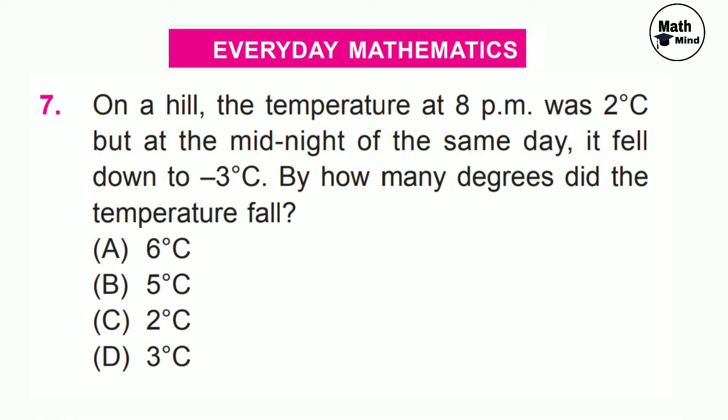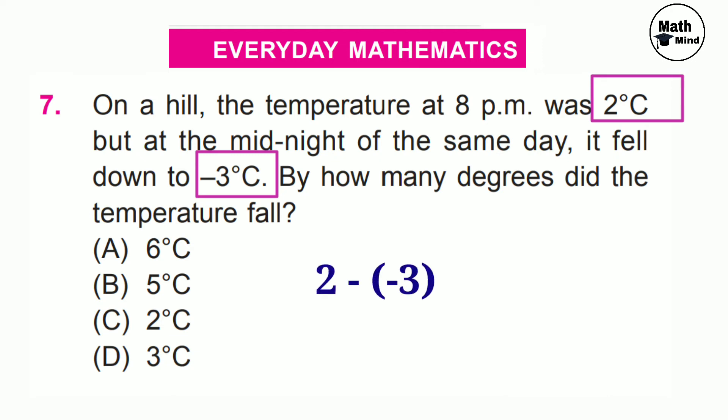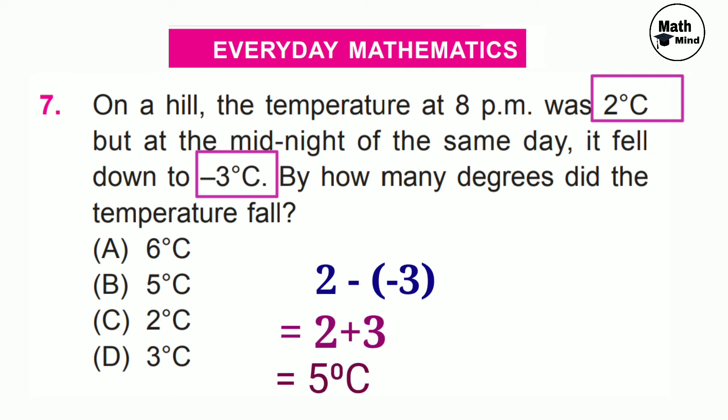Everyday Mathematics — question number 7: on a hill the temperature at 8 pm was 2°C, but at midnight of the same day it fell to −3°C. By how many degrees did the temperature fall? This is the same method as question 4: highest is 2, lowest is −3. So 2 minus (−3) = 2 plus 3 = 5°C. The temperature fell 5°C from 8 pm to midnight. Option B is correct.